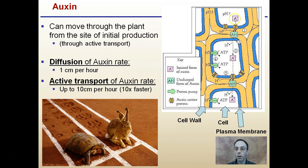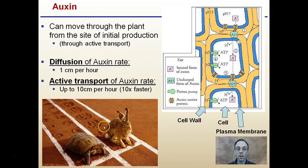We see our auxin moving down through the process of active transport, moving those proteins embedded in the cell wall through the cell membrane, and it's using ATP. So it is an energy investment for the plant, but it's advantageous because it gets that auxin throughout its system much faster. It's kind of the tortoise and the hare example — diffusion would be the tortoise, and active transport would be the hare.